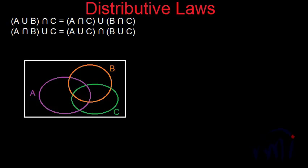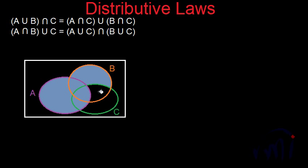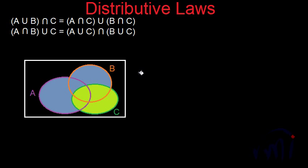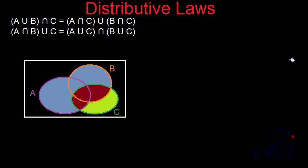First we will understand the first one, which is A union (B intersection C) is equal to (A intersection C) union (B intersection C). The gray portion represents A union B. Then we have the intersection with C, represented by the green circle. A union B intersection C is the portion common between C and A union B — shaded in chocolate brown color.